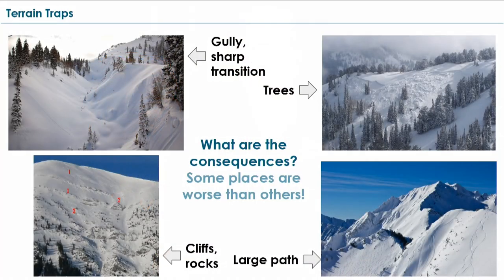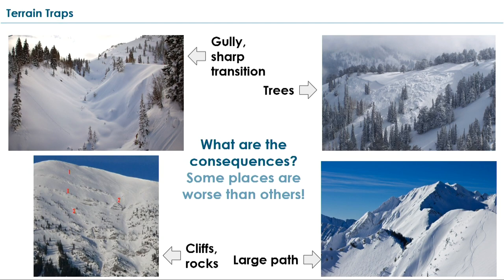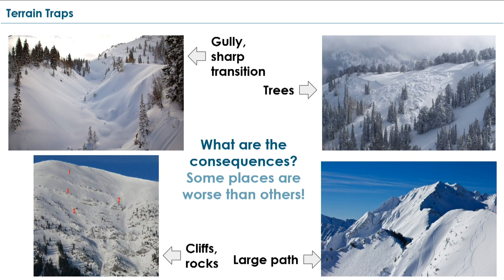Terrain traps are pieces of terrain that might elevate the consequences of getting caught in an avalanche — things like gullies, sharp transitions, trees, cliffs, rocks, or a really large avalanche path can get you in trouble even with just a small avalanche. Like I said when we were talking about concavities, if a small avalanche breaks and puts you in a gully, where is that snow going to go? It has nowhere to go other than pile up above you and bury you pretty deep in that debris pile.